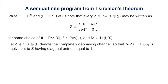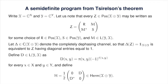The dephasing channel delta will be used to enforce the constraint that the diagonal entries of the diagonal blocks R and S are all equal to 1. In particular, the constraint that delta of Z equals the identity operator is equivalent to Z having all diagonal entries equal to 1. Finally, define D as shown, and let H be the Hermitian operator acting on the direct sum of X and Y formed by putting D and D-adjoint in the off-diagonal blocks with zero operators on the diagonal blocks, multiplied by one-half.